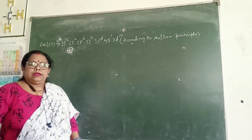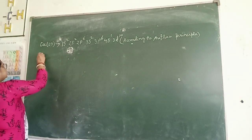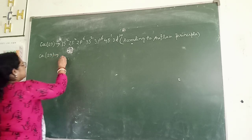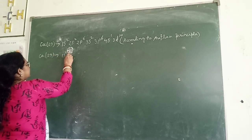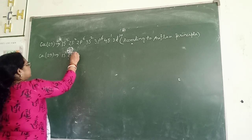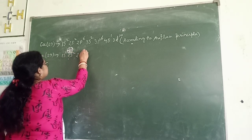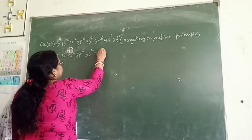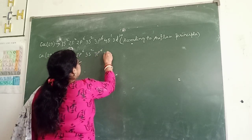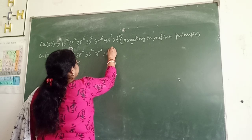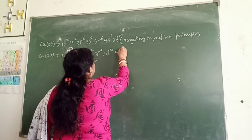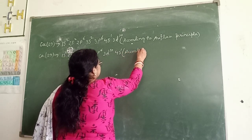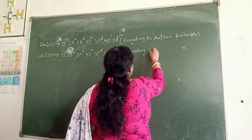According to energy level, Cu 29, copper with 29 electrons, is written as: 1s2, 2s2, 2p6, 3s2, 3p6, 3d10, 4s1. According to energy level.